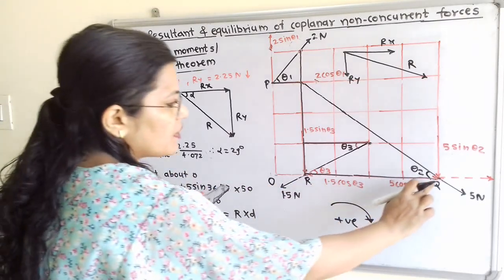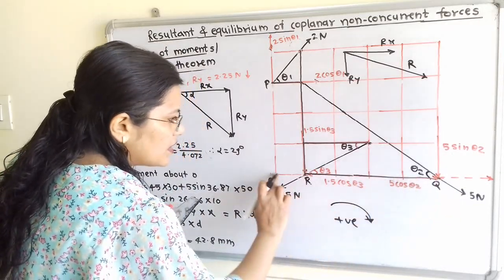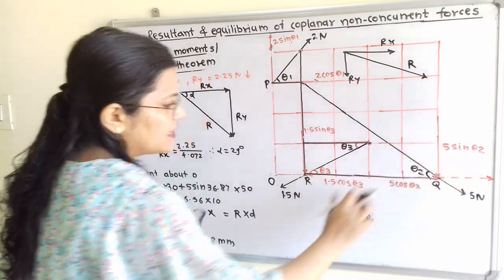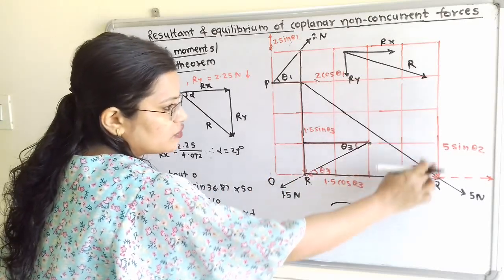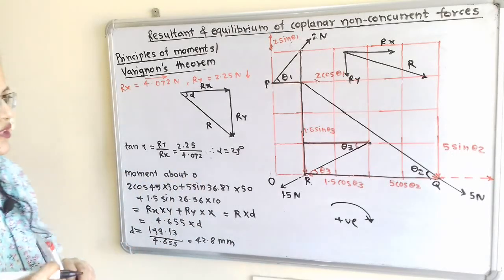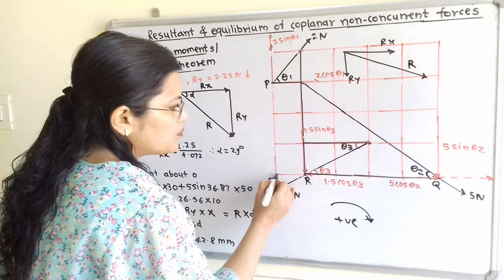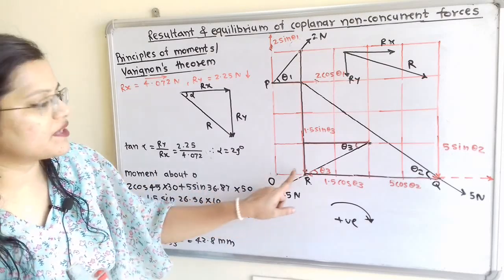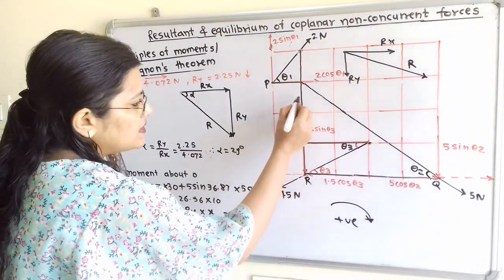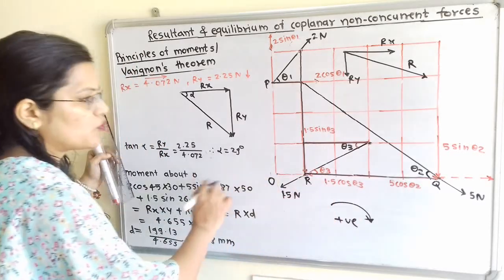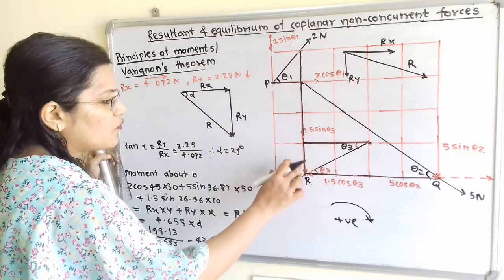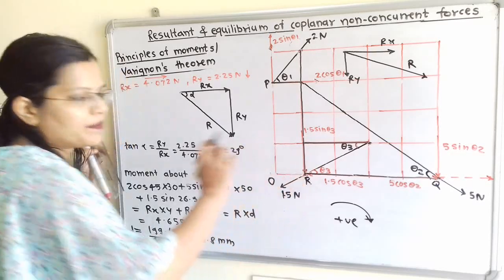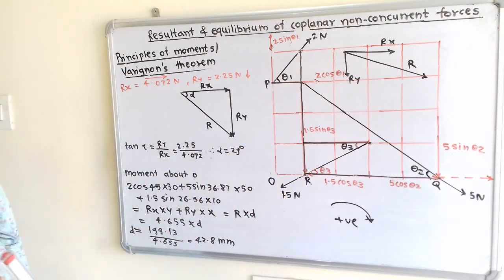For the 5N force, the horizontal component 5cos(θ2) passes through O, so no perpendicular distance. The vertical component 5sin(36.87°) acts downward at a perpendicular distance of 50 mm (5 sides) from O, giving clockwise moment: +5sin(36.87°) × 50. For the 1.5N force, 1.5cos(θ3) passes through O, and 1.5sin(θ3) acts downward at 10 mm, giving +1.5sin(26.56°) × 10.